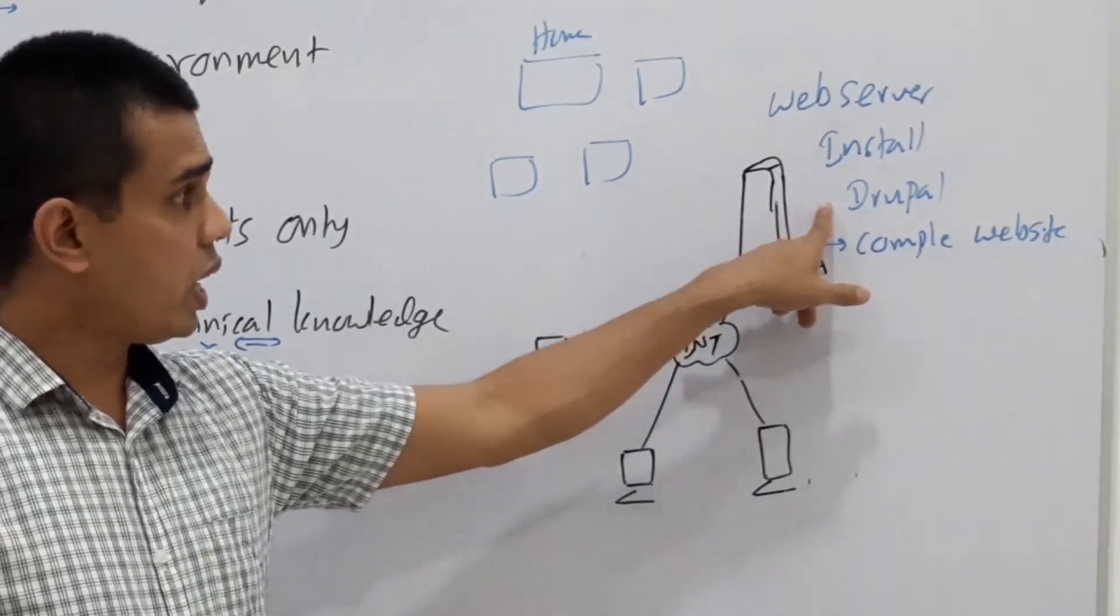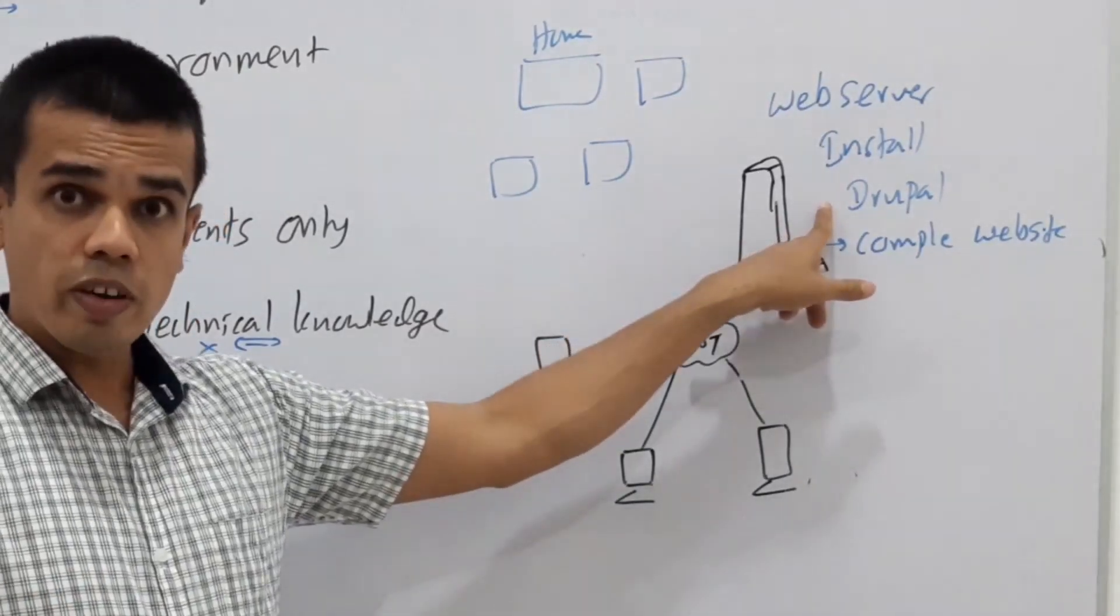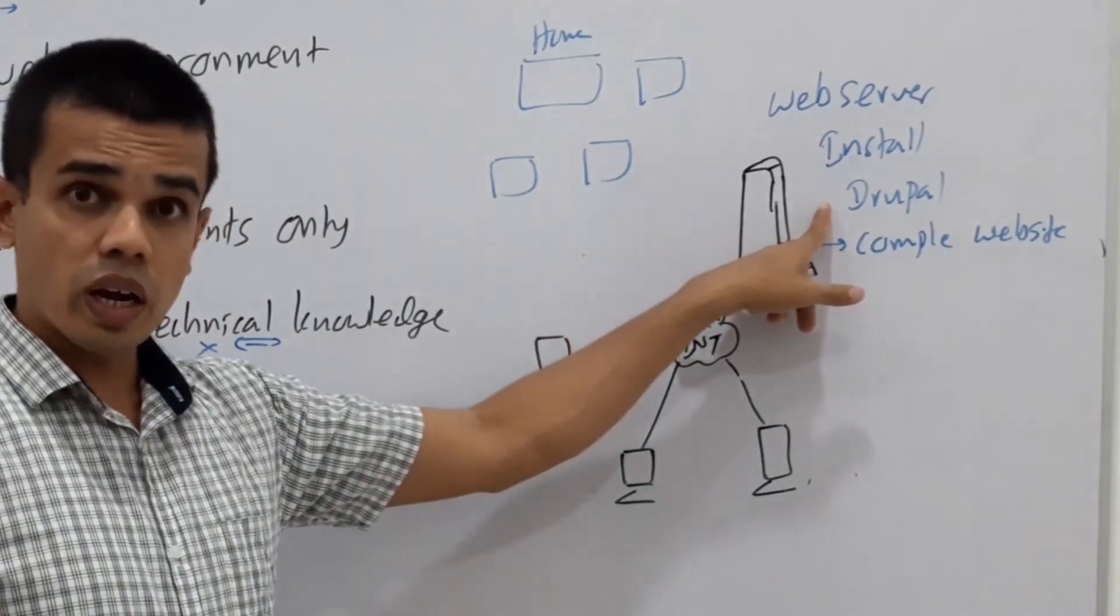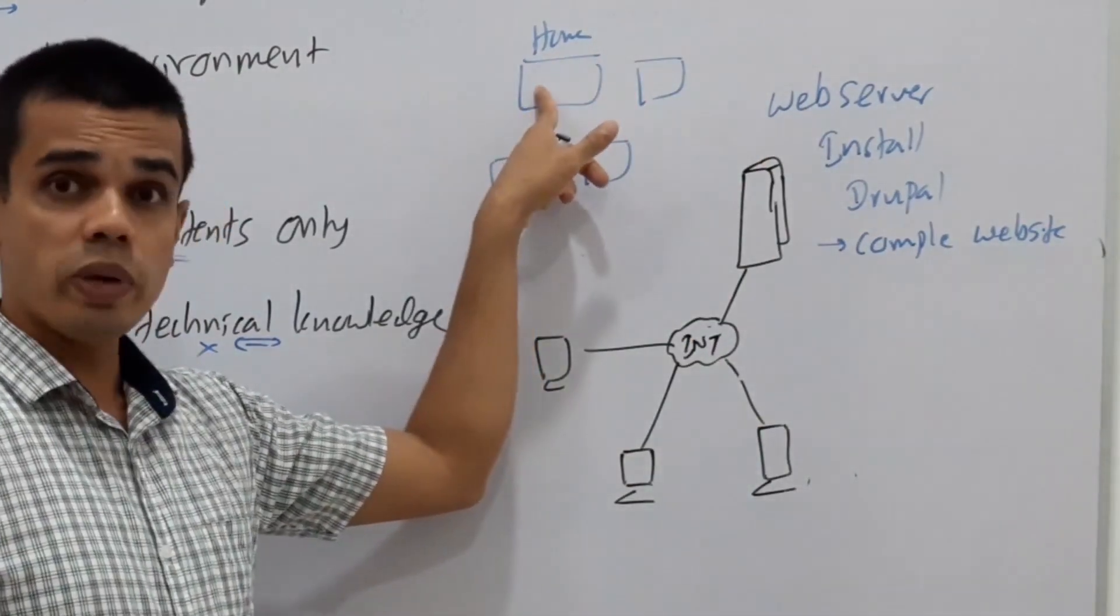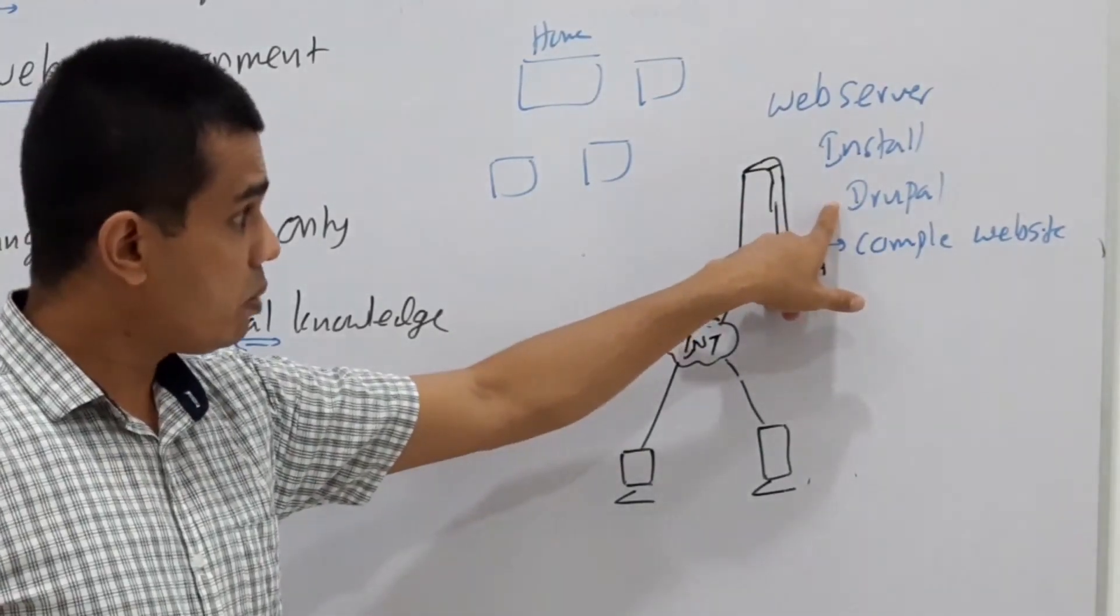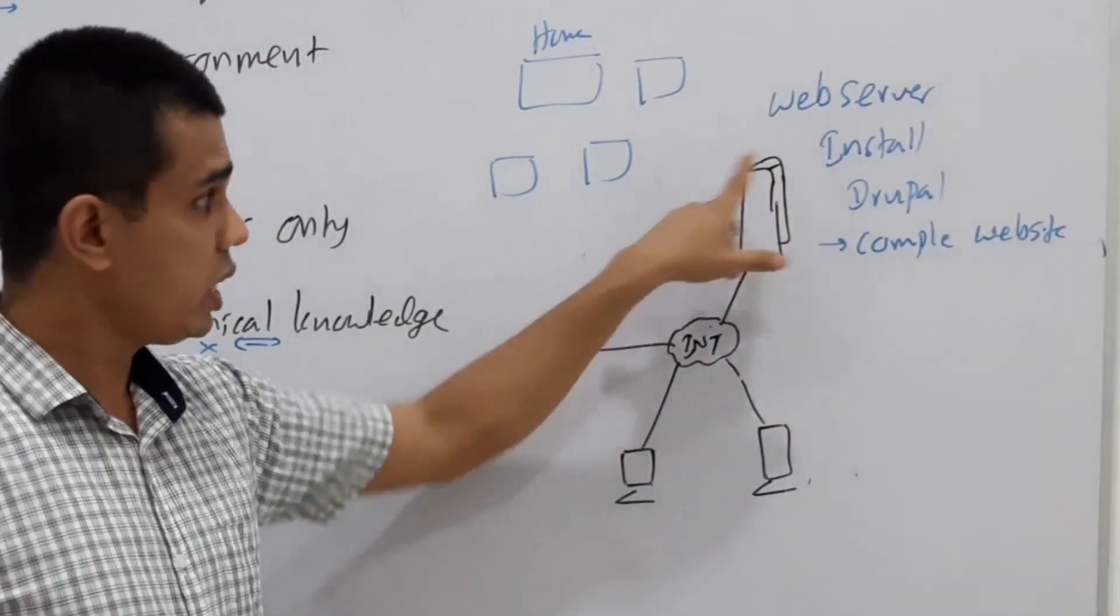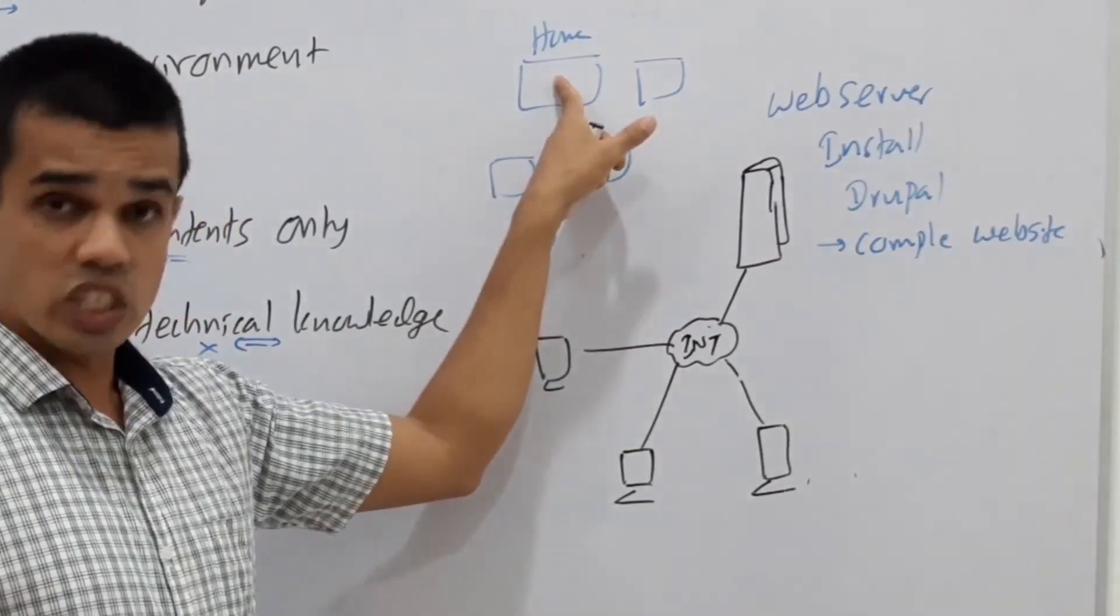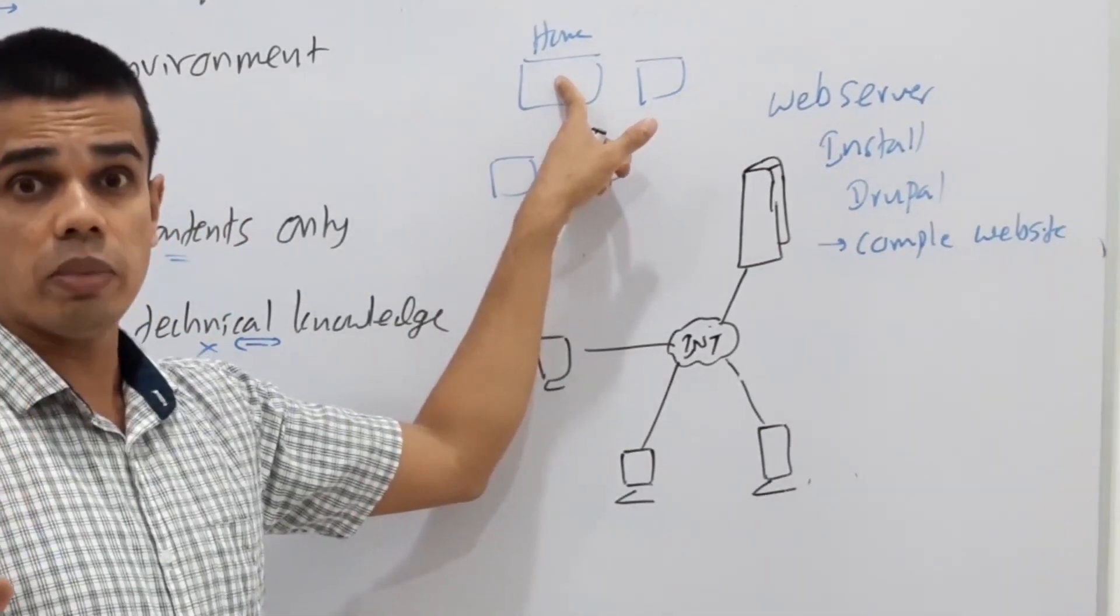We can get Drupal as a package. After getting Drupal, this is the web server, we are going to install the Drupal package. Once you install it, it makes the complete website in it. Website is made. The home page and other detailed pages are made. But regarding Drupal, do they know what is the title of the web page we're going to make? Do Drupal know what hyperlinks to be added? They don't know.